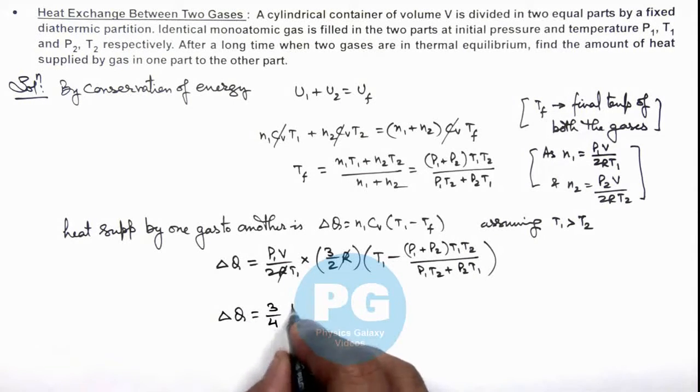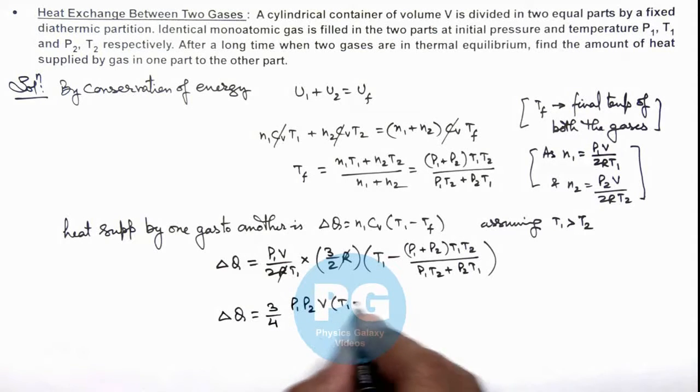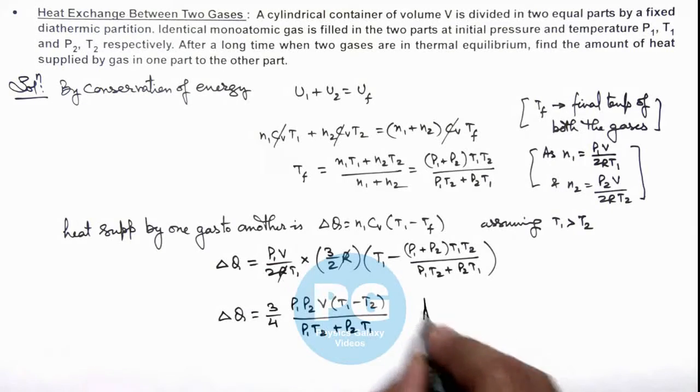I just leave it as an exercise for you to simplify this expression and get the final result which is ΔQ = (3/4)(P₁P₂V)(T₁ - T₂)/(P₁T₂ + P₂T₁). This is the result of this problem.